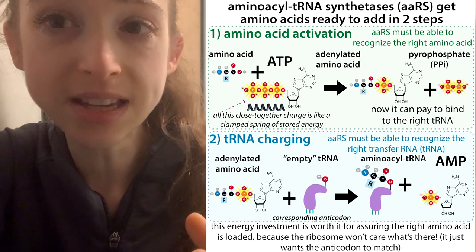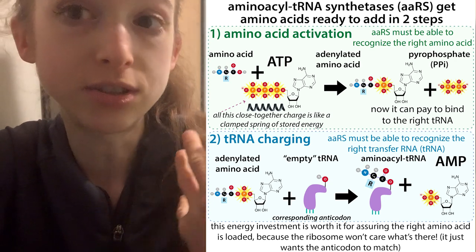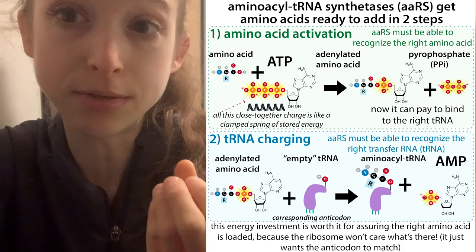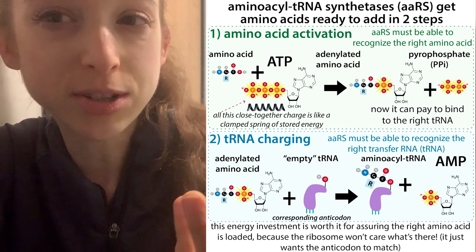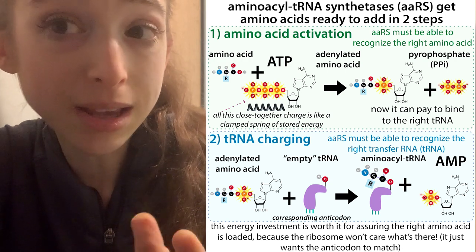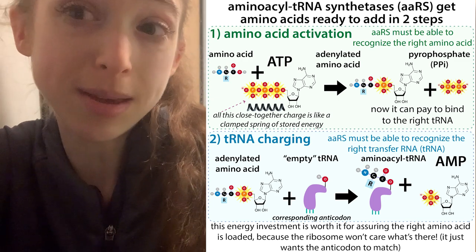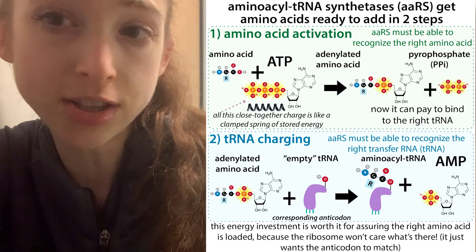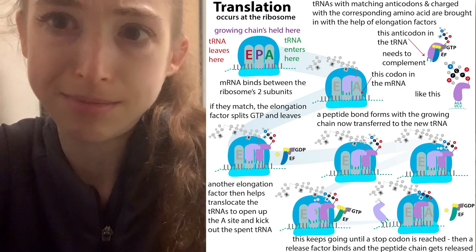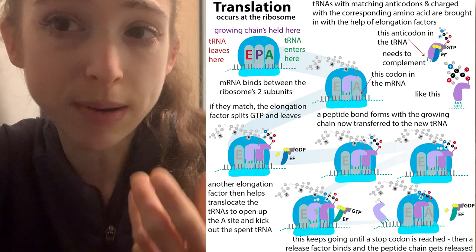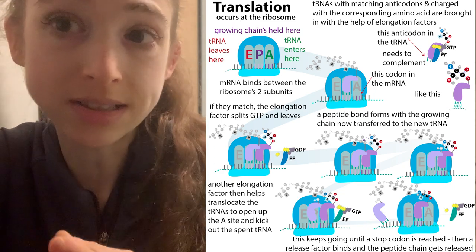Thanks to all of these checks, the ribosome doesn't need proofreading activity. Unlike DNA polymerase, which can go backwards and fix mistakes, the protein-making machinery cannot proofread. However, a mistake in making a protein is less consequential than a mistake in DNA, because the protein is just a single copy — an error in one copy won't influence much. But if you make a mistake in DNA, you can pass on a mutation. Still, the ribosome wants to make good proteins, so a lot of energy is spent piecing together amino acids correctly.